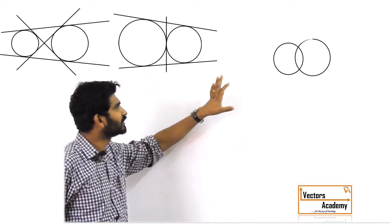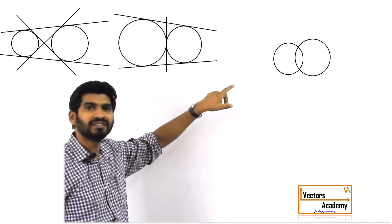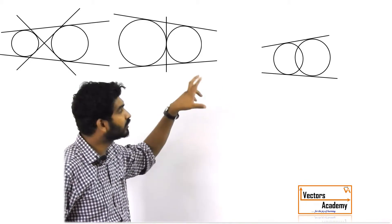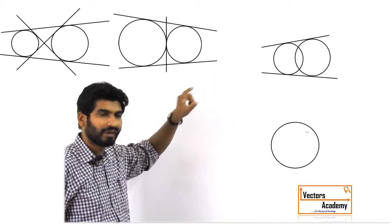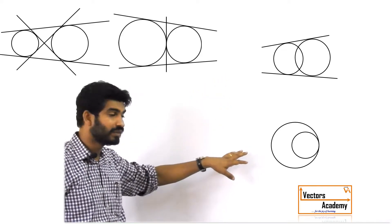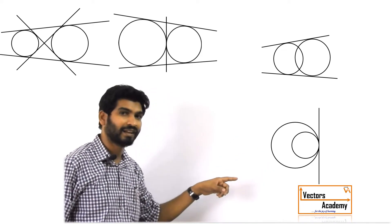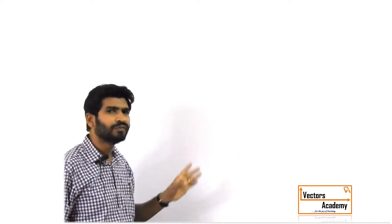Consider another case: if the circles are intersecting each other, there are only 2 common tangents that can be drawn. As a fourth case, if the circles are touching each other internally, there is just 1 common tangent. These are the 4 different cases you should know well. You can identify which case applies by simply finding the centers and radii of the two circles.